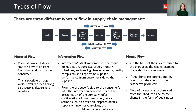Let's look at three different types of flow in supply chain management. First is material flow, which includes a smooth flow of an item from the producer to the consumer, possible through various warehouses among distributors, dealers, and retailers. Second is information flow or data flow, which comprises the request for a quote, purchase order, monthly schedules, engineering change requests, quality complaints, and reports on supplier performance from the customer side to the supplier.